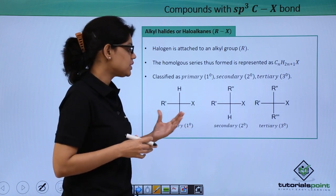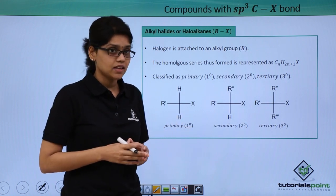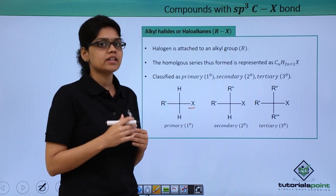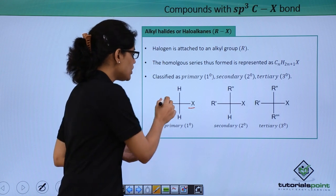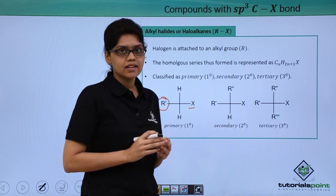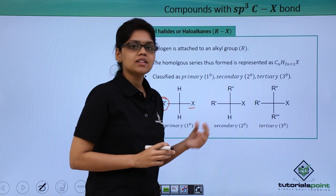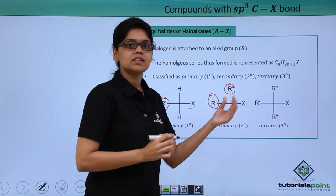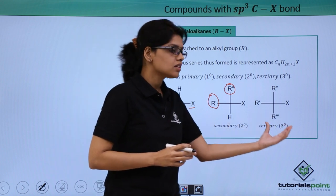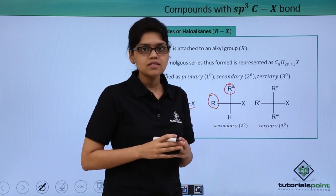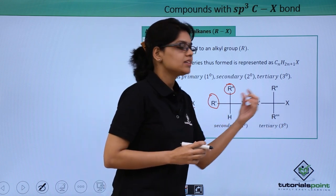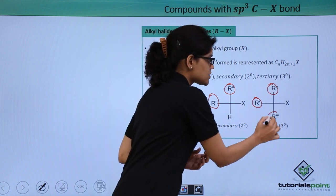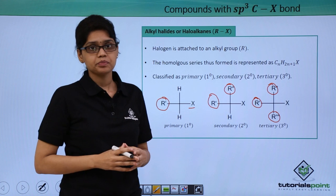For example, in a primary alkyl halide the halogen-bearing carbon is attached to one other carbon atom or alkyl group. In a secondary alkyl halide, the carbon bearing the halogen atom is attached to two other alkyl groups or carbon atoms. In tertiary alkyl halides, the carbon bearing the halogen atom is attached to three other alkyl groups, as can be seen from the structure.